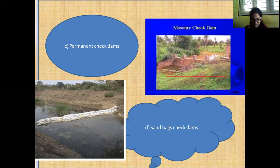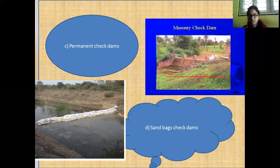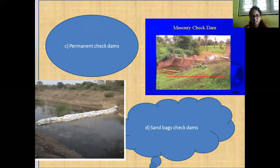Such permanent dams are made up of stones, boulders and rocks of 8 to 12 inches in diameter, packed with galvanized iron wire mesh. For sandbag check dams, sandbags are filled with sand and placed across a channel, ditch or drainage to arrest the soil, silt and water in the stream.